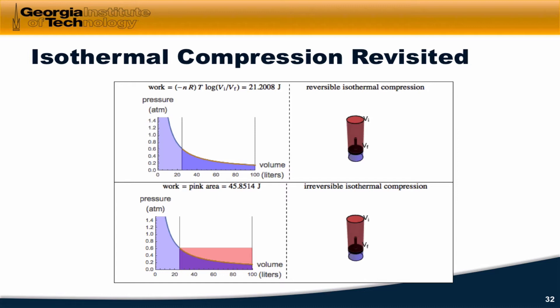The pinkish-bluish area here under the curve is the work performed in each case. In the top case you don't see any pink because the area under the curve is just the area under the gas pressure versus volume curve, since the external pressure and the gas pressure were equal. Notice that the work performed in the top case is significantly less than the work performed in the bottom case, so path two involves a lot less work than path one. The number of joules of work performed in each case are shown quantitatively here: 46-ish for path one and 21-ish for path two.